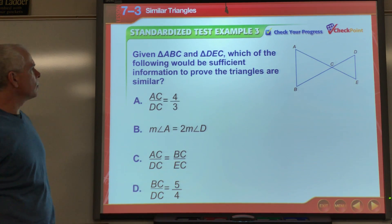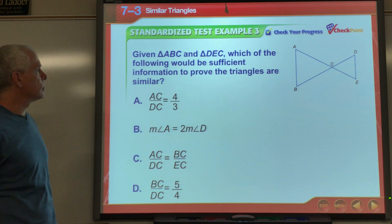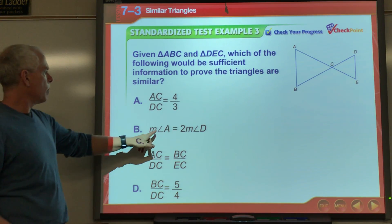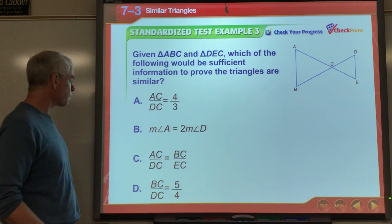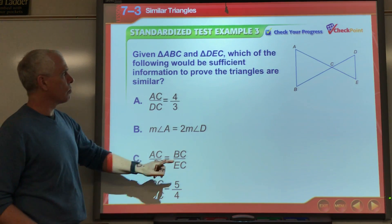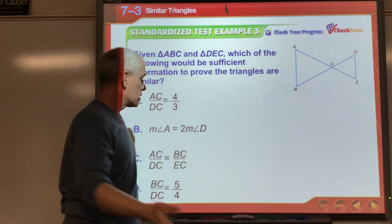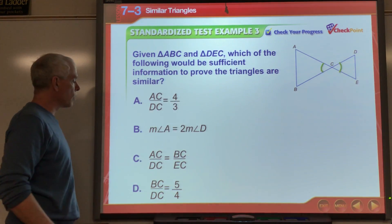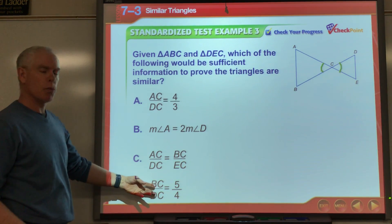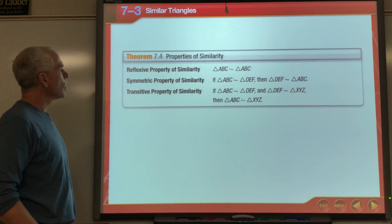Given two triangles, which information is sufficient to prove similarity? Choice A says AC/DC = 4/3 — just one set of sides, not enough. Choice B says the measure of angle A is twice the measure of angle D — corresponding angles must be congruent, so that's definitely wrong. Choice C says AC/DC and BC/EC are proportional — two sets of sides proportional with the vertical included angles congruent allows SAS Similarity. C is the answer.